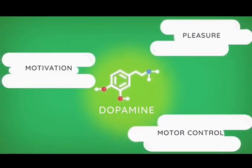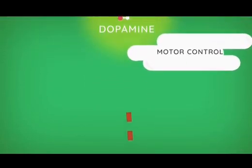Dopamine is a very important neurotransmitter, associated with pleasure, motivation, and motor control. But where exactly does this chemical come from? Well, it actually starts with the food that you eat.